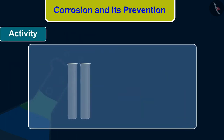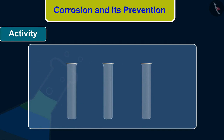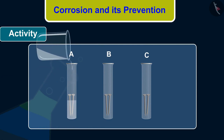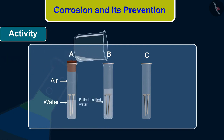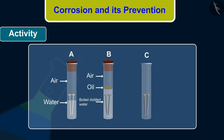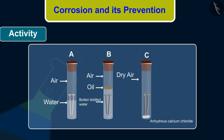Take three test tubes and place clean iron nails in each of them. Label these test tubes A, B and C. Pour some water in test tube A and cork it. Pour boiled distilled water in test tube B. Add about 1 ml of oil and cork it. The oil will float on water and prevent the air from dissolving in the water. Put some anhydrous calcium chloride in test tube C and cork it. Anhydrous calcium chloride will absorb the moisture, if any, from the air.